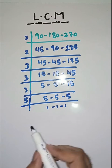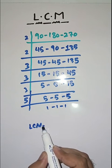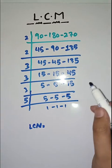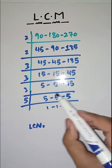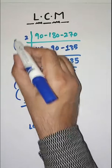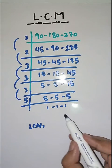So we get LCM of 90, 180, and 270 by multiplying prime factors: 5 × 3 × 3 × 3 × 2 × 2, which equals 540.